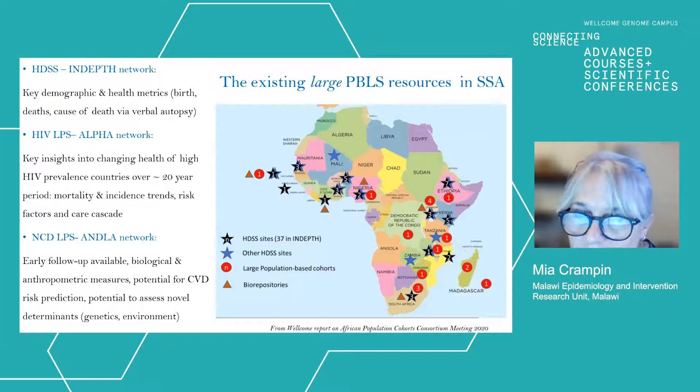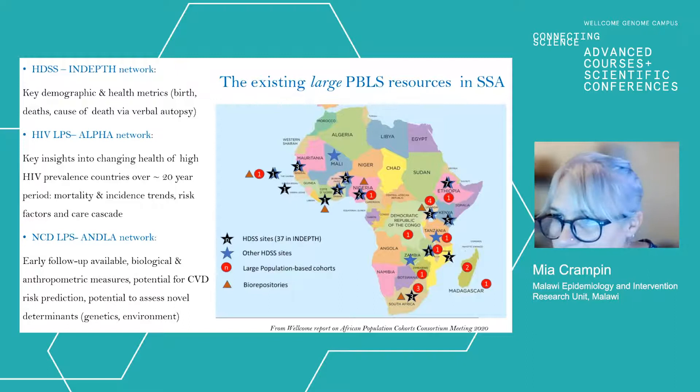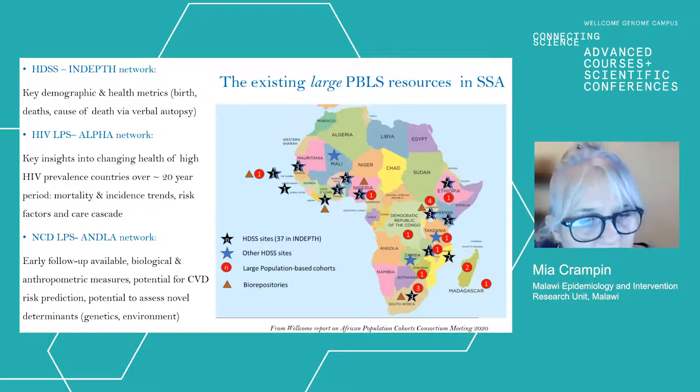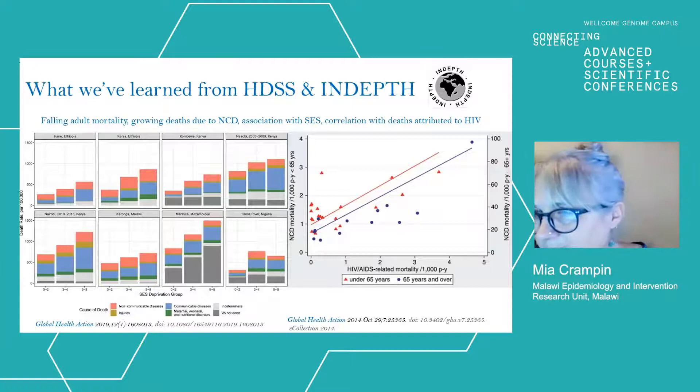Building out of Alpha, we have the ANDLA Network — the African Non-Communicable Disease Longitudinal Data Alliance — which has brought together NCD data from six of the Alpha partners to stimulate NCD population-based longitudinal studies, sharing and pooled analysis of data. So what have these networks, with their analysis of longitudinal data, been able to tell us about long-term conditions in the last few years?